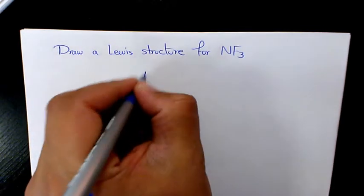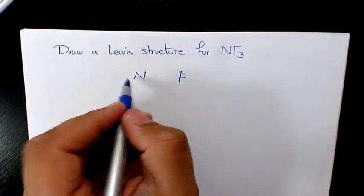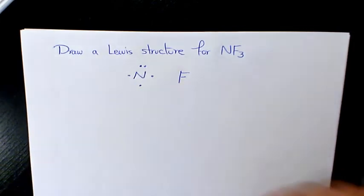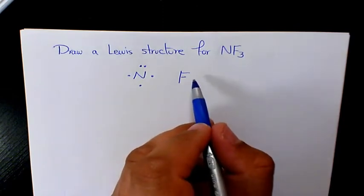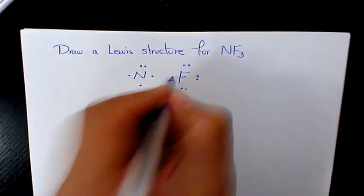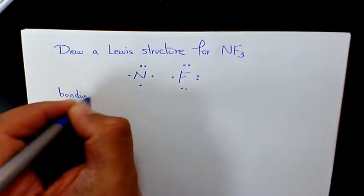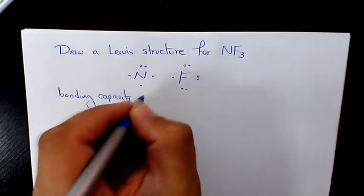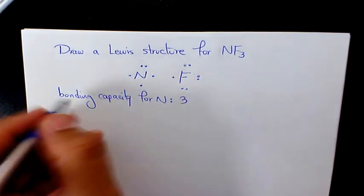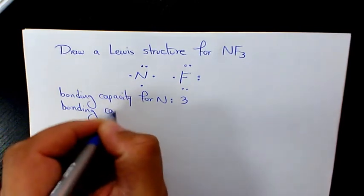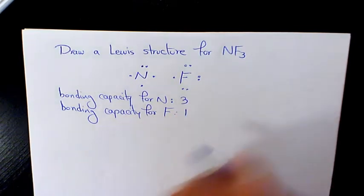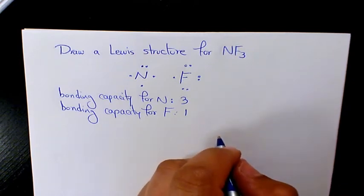We have nitrogen and we have fluorine. Nitrogen has five valence electrons, and fluorine has seven valence electrons: one, two, three, four, five, six, seven. So the bonding capacity for nitrogen is three — we don't count the lone pair — and the bonding capacity for fluorine is one.